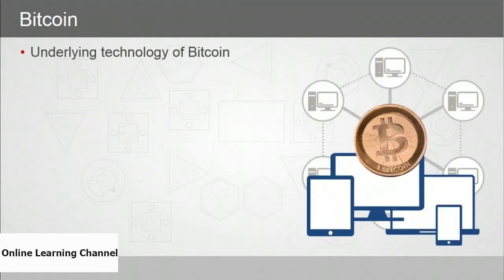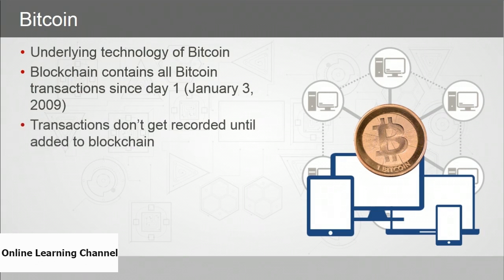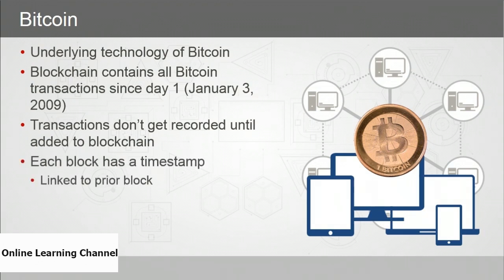The bitcoin blockchain contains all bitcoin transactions since day one — January 3rd, 2009. Transactions don't get recorded until they're actually added to the bitcoin ledger through consensus of at least half the network. Each block on the chain has a timestamp, and the block is linked to the prior block by the hash of that prior block.